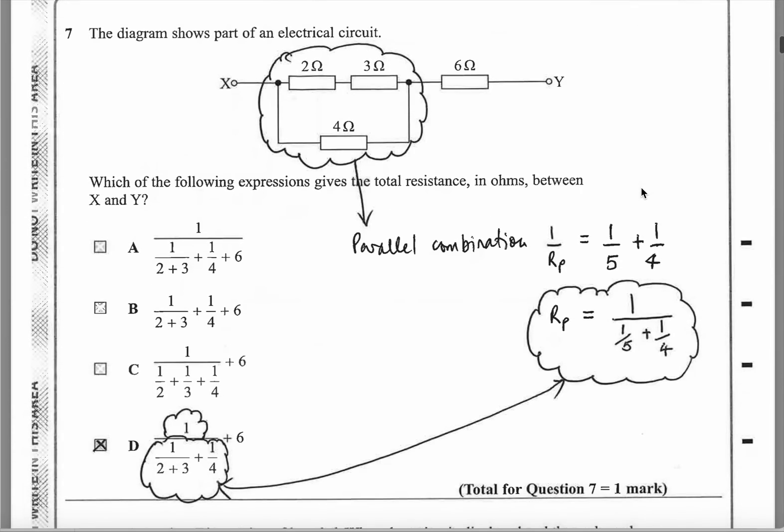Question 7. They've got electricity. Here you've got a parallel combination, and here you've got 6 ohms outside the parallel combination between X and Y. Which expression gives the total resistance between here and there? First you've got to work out what is this parallel combination.